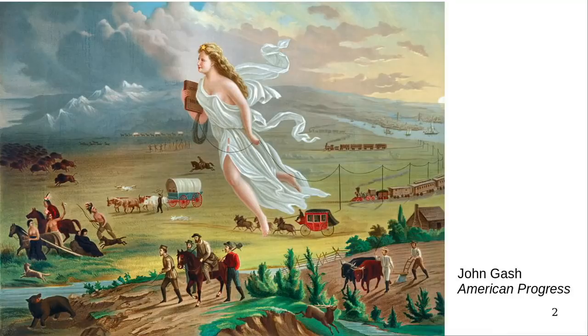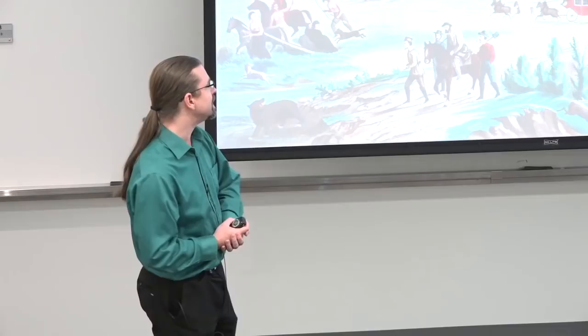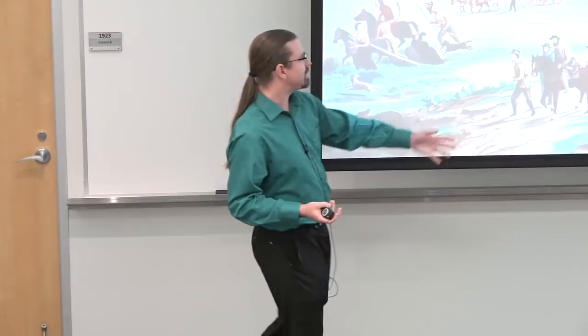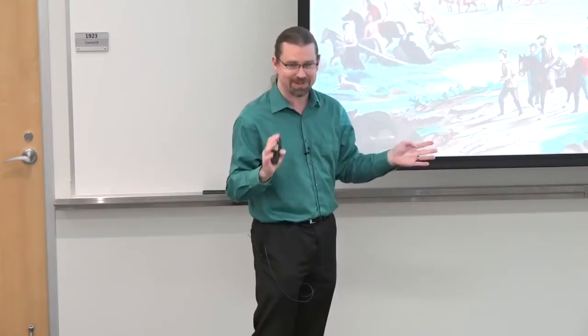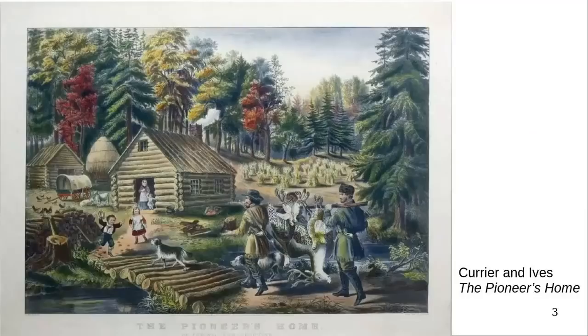which was all about westward migration. So American progress, this idea that manifest destiny, American citizens, the American nation is destined to conquer all of the land of the American continent from coast to coast. Never mind that there were already people here. This is the European story for the moment. So there's this frontier, which is moving westward throughout the 19th century.